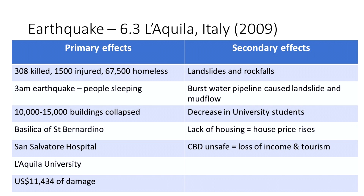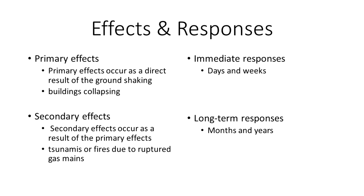Secondary effects in Italy included landslides and rock falls after the earthquake. We also saw university student numbers decrease, as well as a lack of housing, which meant house prices rose in the area.